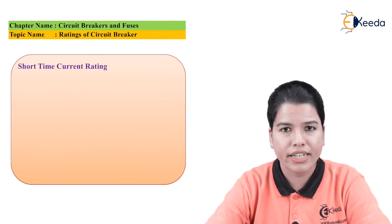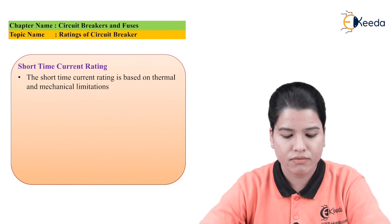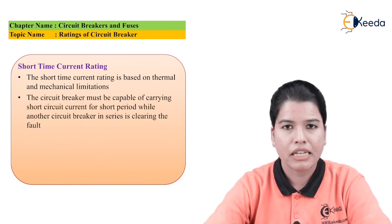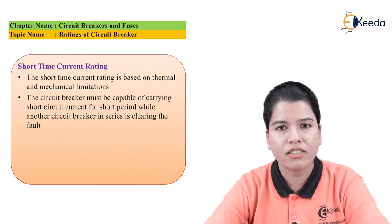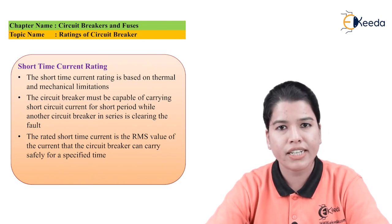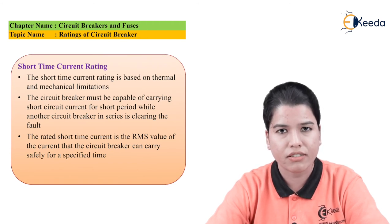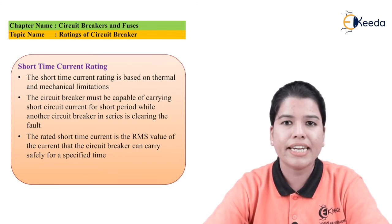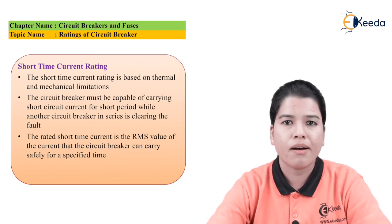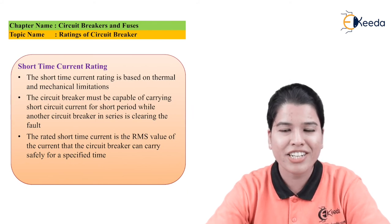Next is short time current rating, which is based on thermal and mechanical limitations. A circuit breaker should be capable of carrying the short circuit current for a very small time when another circuit breaker connected in series is clearing the fault. The rated short circuit current is the RMS value of the fault current that the circuit breaker can carry safely for a certain period of time. These are the various ratings of the circuit breaker that are all taken into consideration while designing it, and a particular circuit breaker is selected for a particular application depending upon these ratings.